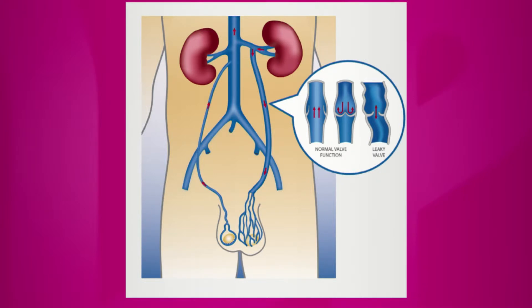Blood flows the wrong way — that phrase speaks to the opposite of gravity and the opposite of the heart beating. How exactly does that happen? Veins generally work passively, allowing gravity to push blood back towards the heart, but there are small valves in the vein. When those valves malfunction, blood flows up and then back down. The valves that trap blood and prevent it from flowing backwards — when they don't work, the blood flows backwards.